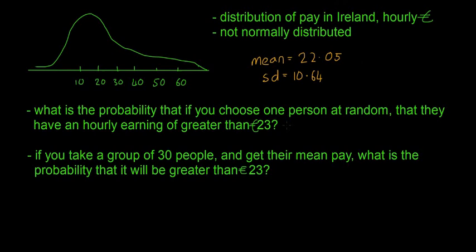The first question, we actually can't answer. It's a trick question. The reason is because it's not normally distributed. We can't use the mean, the standard deviation, and the 23 euro to answer it, because it's not a normal distribution. We can't use our z-tables. We cannot answer this question without knowing the exact formula for this distribution.